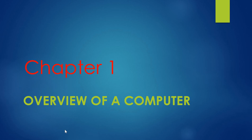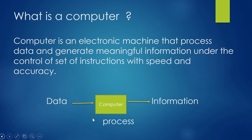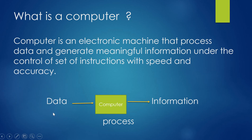What is a computer, or the definition of a computer? A computer is an electronic machine that processes data and generates meaningful information under the control of a set of instructions with speed and accuracy. It takes the data and produces information.